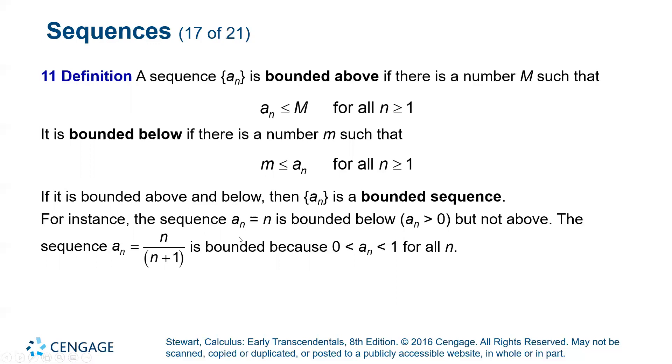Another example, n over n plus one that we've looked at a couple times, is bounded both above and below because the values are always in between zero and one. So zero could be considered a lower bound and one could be considered an upper bound.